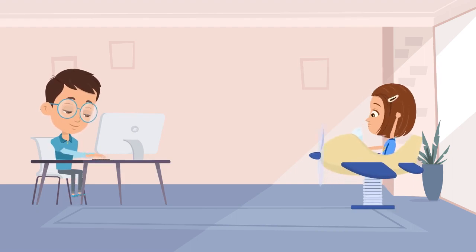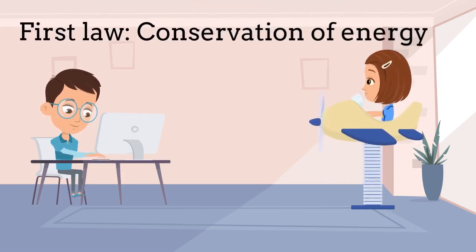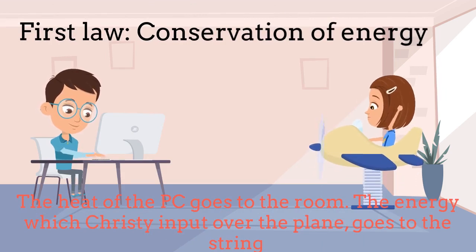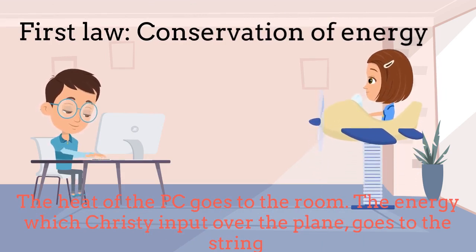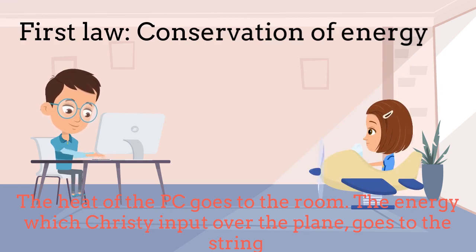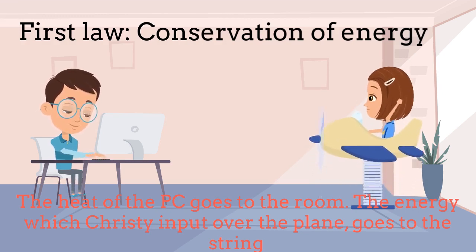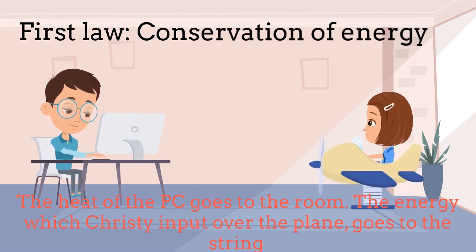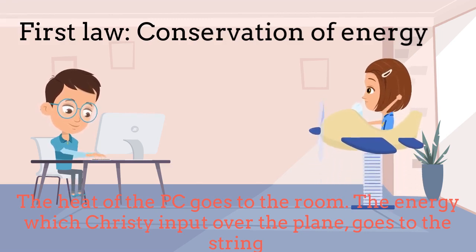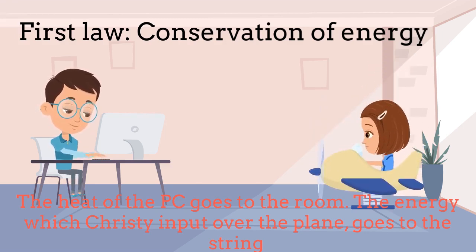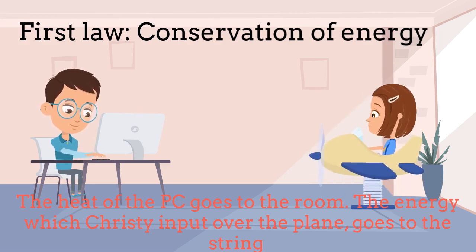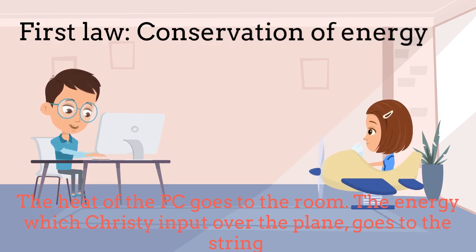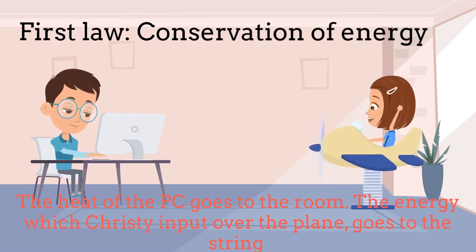The first law of thermodynamics is related to energy conservation. Any flow of heat or work is converted to internal energy of different objects. The heat of the computer, for example, flows throughout everything inside the room including Peter and Christy. At the same time when Christy jumps or moves, she transmits that energy to the stream below her. The computer is very hot, transmitting my energy to the stream below.